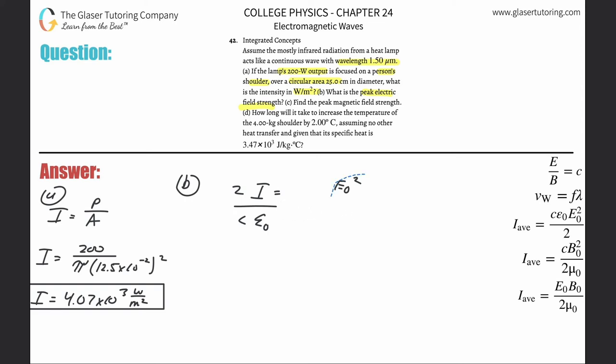To find the electric field strength, start moving some stuff around, bring the two over, bring this stuff down, and then square root both sides to get rid of the square. That's the formula. Square root of two times the intensity of 4.07 times 10 to the third, all divided by the speed of light, 3 times 10 to the 8, multiplied by the permittivity 8.85 times 10 to the minus 12th.